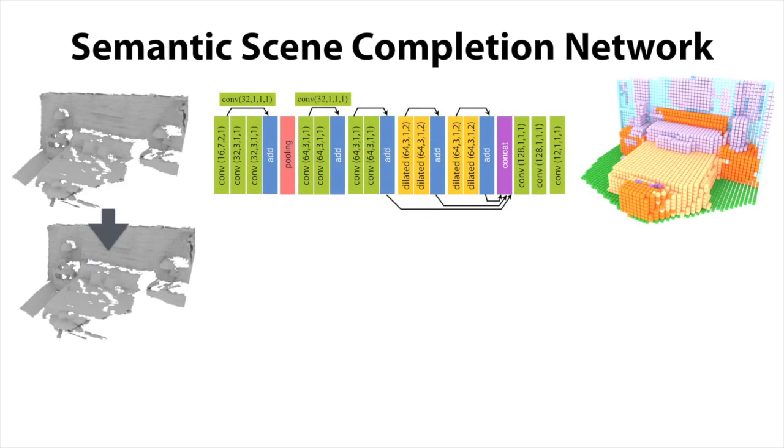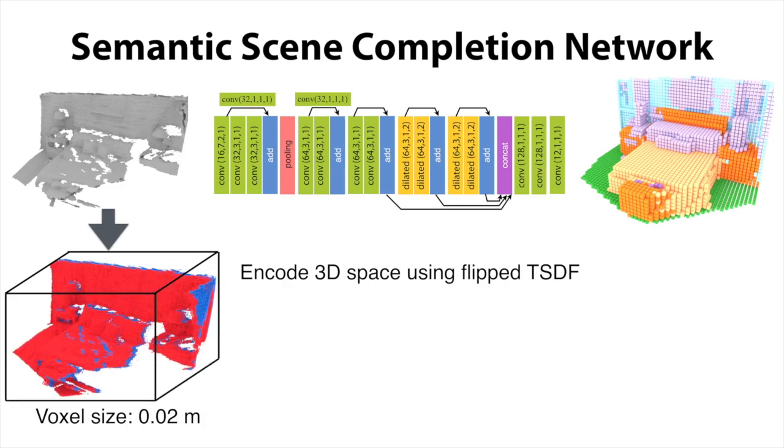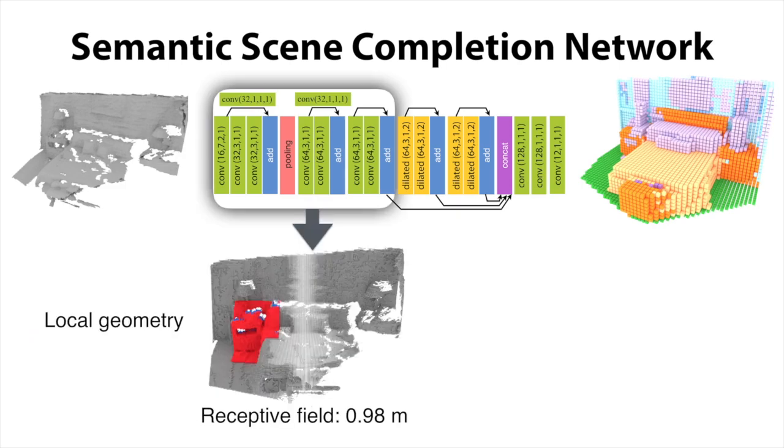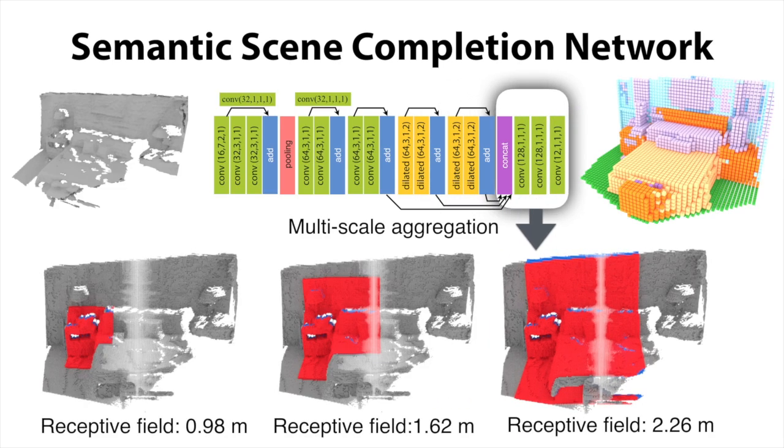Given a 3D scene, we encode the geometry of 3D space with the flipped truncated signed distance function. Then, we feed this 3D volume to the SSCNet. The network first uses several 3D convolution layers to learn a local geometric representation. Then, using a dilation-based 3D context module, we drastically increase the receptive field to capture higher-level contextual information. Finally, the network responses from different scales are concatenated and aggregated to densely predict the final voxel labels.